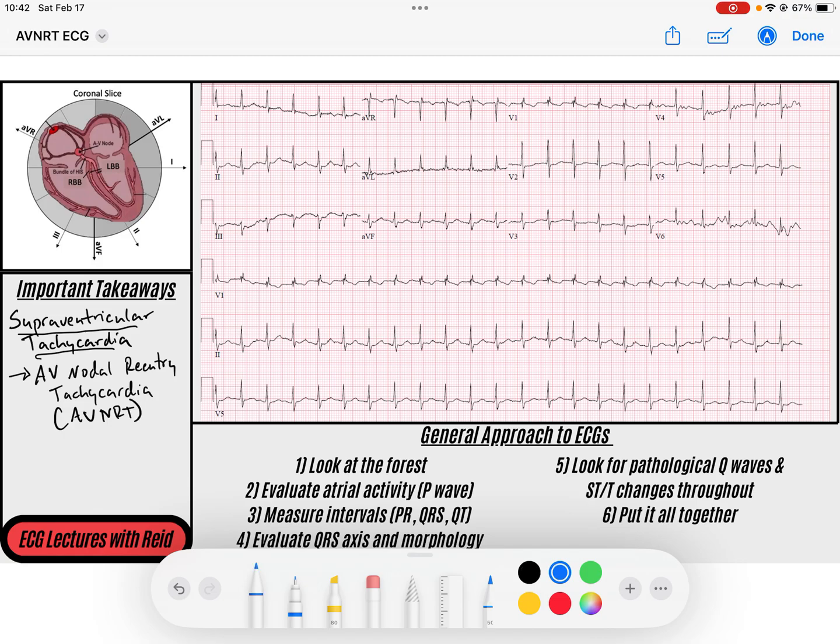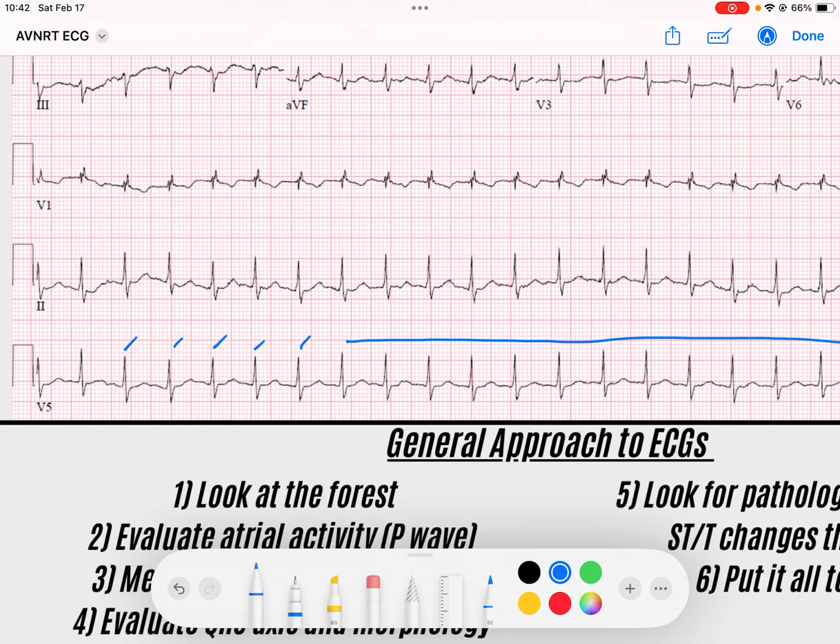AVNRT, AV nodal reentry tachycardia, is a narrow complex supraventricular tachycardia. As you can see here, that is very regular. It is narrow complex as long as there are no ventricular conduction delays and you see that throughout the entirety of the rhythm. You can see if we get the rate here, we have this QRS on this solid line: 300, 150, just under 150, maybe 140 beats per minute.